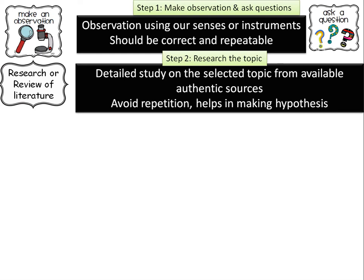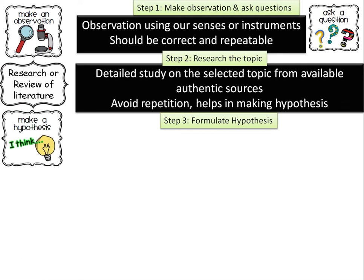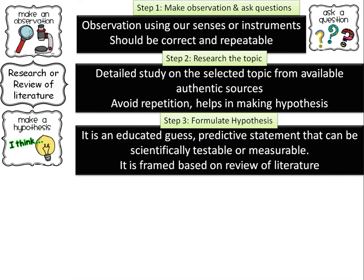Therefore step three is formulate or frame a hypothesis, and this is probably the most important step in research or scientific method. A hypothesis is an educated guess, a possible answer, a predictive statement that can be tested by scientific methods. In the last step, step two, we did a detailed study on the topic or review of literature, and that review of literature will help us to frame a good hypothesis.